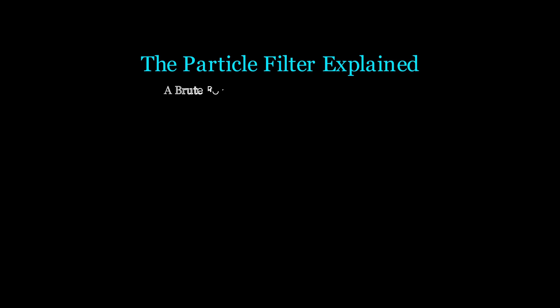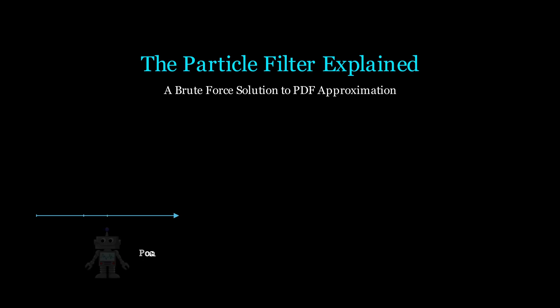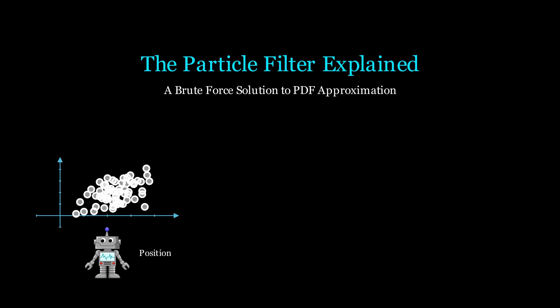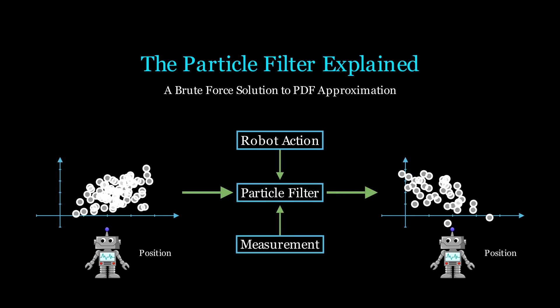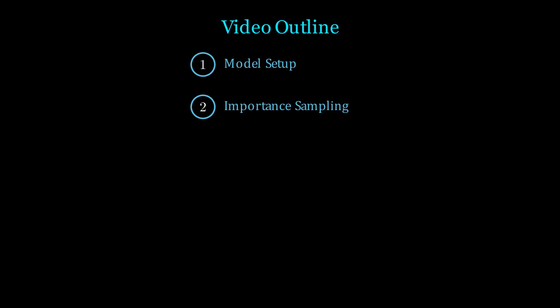Welcome. The particle filter is an intuitive and widely implemented localization algorithm. Compared to the unscented Kalman filter which intelligently samples points, the particle filter is a brute force solution with some unique properties. We'll cover the model setup, importance sampling and resampling, and then theoretically derive the algorithm.